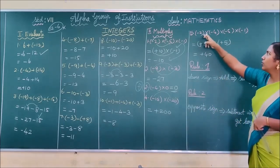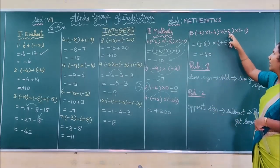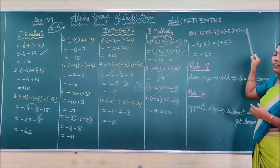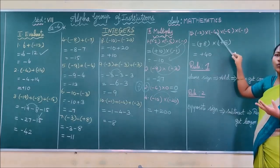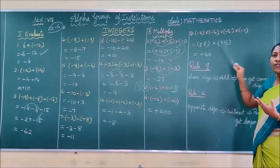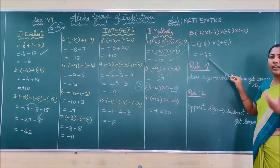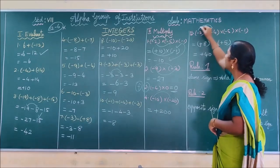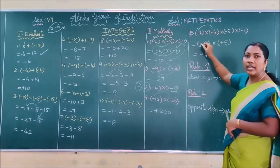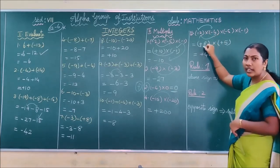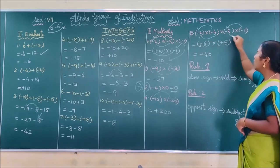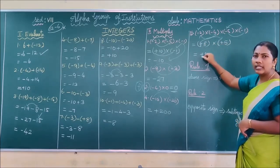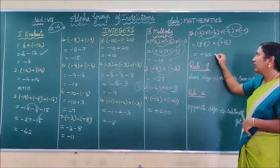See the last multiplication sum: minus 2 into minus 4 into minus 5 into minus 1. Ignore all the symbols and multiply: 2 into 4 = 8, then 5 into 1 = 5, then 8 into 5 = 40. Now for the symbol: minus into minus = plus, then plus into minus = minus, then minus into minus = plus. So the answer is plus 40. I hope you have corrected your mistakes.